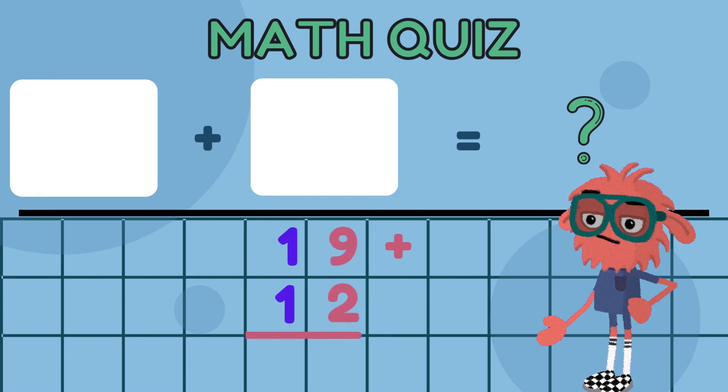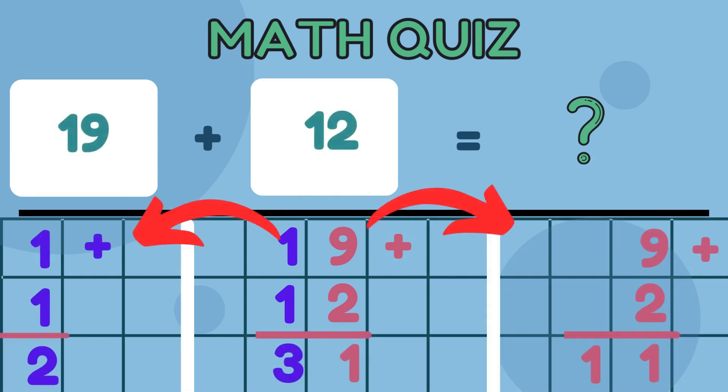1. Write the numbers one above the other. 2. Start adding from the rightmost column, 1's place, moving left. 3.